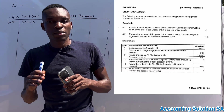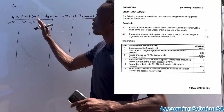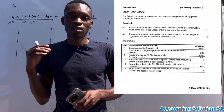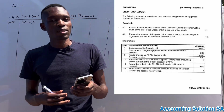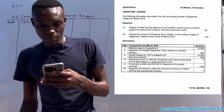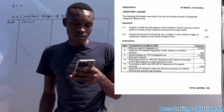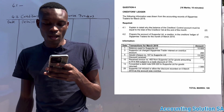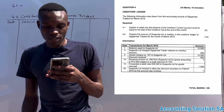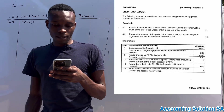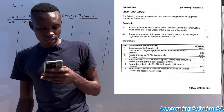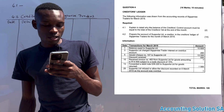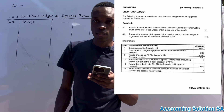In this video we are going to discuss a creditors ledger account. Please make sure that you stay tuned until the end so that you can learn something and be able to write your test or examination. Looking at question 4, a creditors ledger — the following information was drawn from the accounting records of Sinca Misa Traders for March 2019. The required number one: explain in detail why the balance of the creditors control account must be equal to the total creditors list at the end of the month.